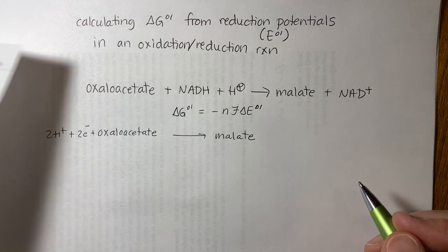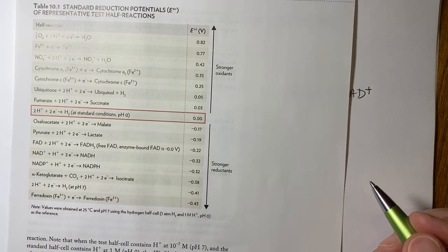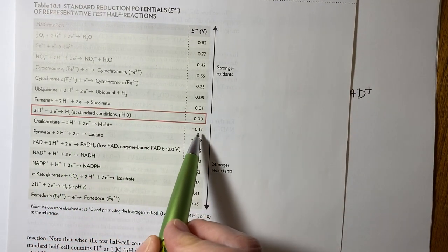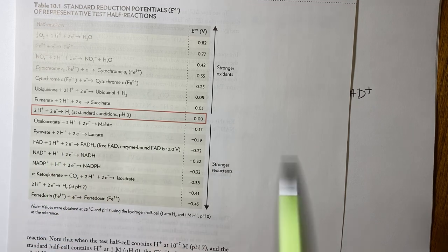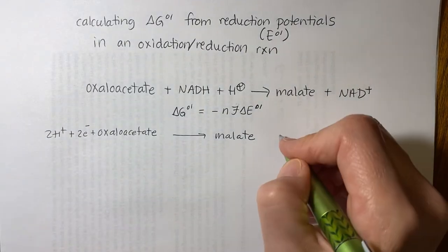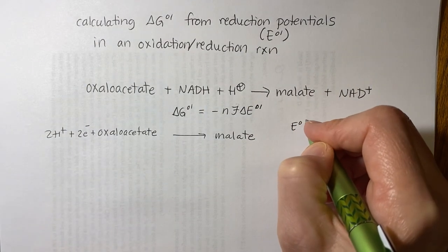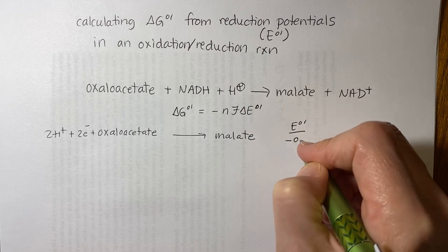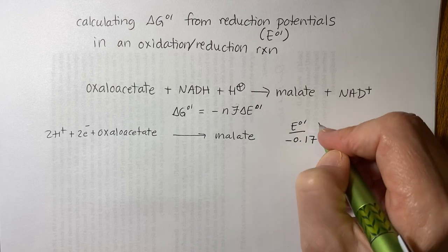And then we need the standard reduction potential for that reaction, which is in the table, minus 0.17. So E not prime equals minus 0.17, and that's in volts.